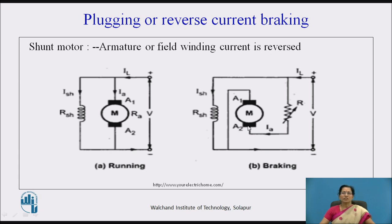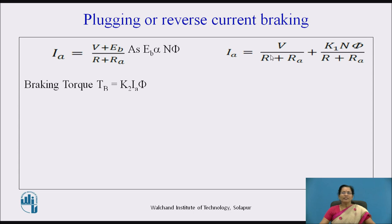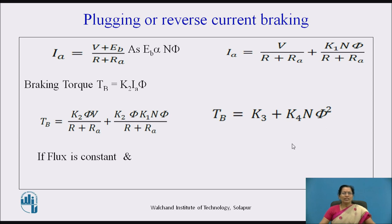Due to this connection, the back EMF and the supply voltage are both in series. The armature current is calculated as I_A = (V + E_B) / (R + R_A). The braking torque is given by K2 * I_A * φ, where I_A = V / (R + R_A) + K1 * N * φ / (R + R_A). Substituting, the braking torque equals K3 + K4 * N * φ². When speed decreases to zero, braking torque equals K3, meaning some braking torque exists at the standstill position.